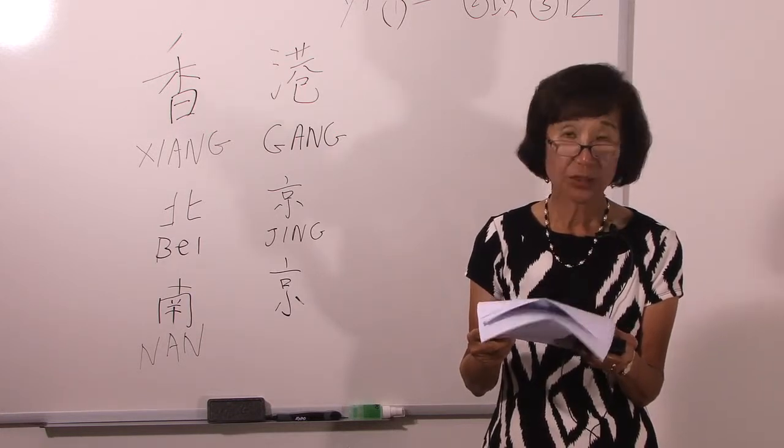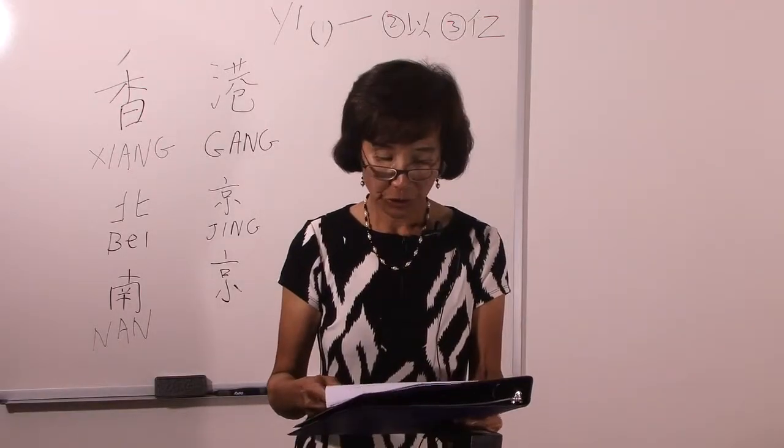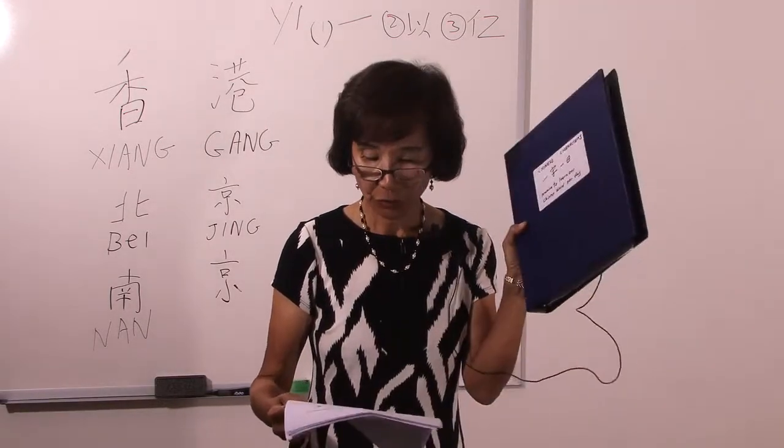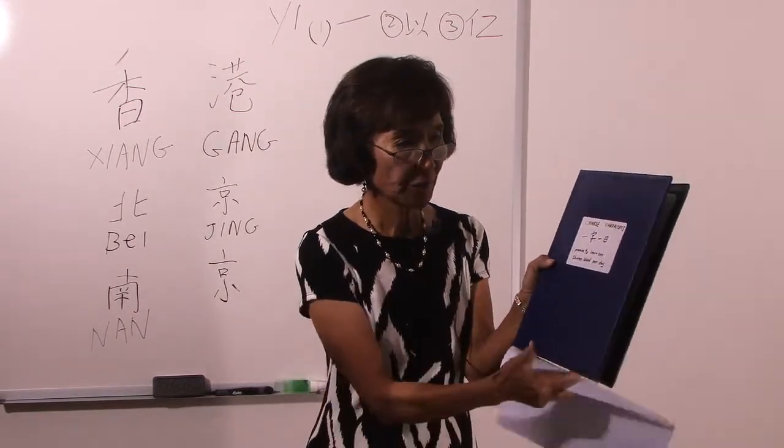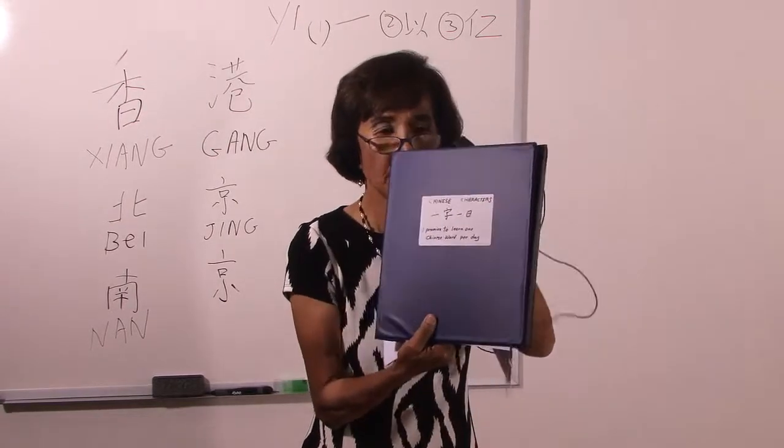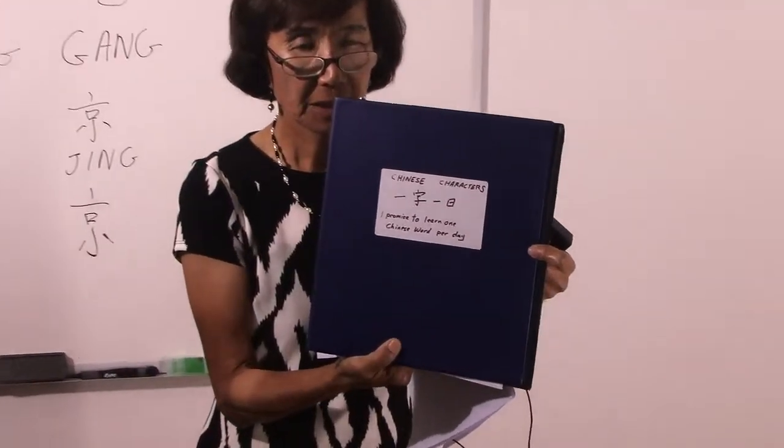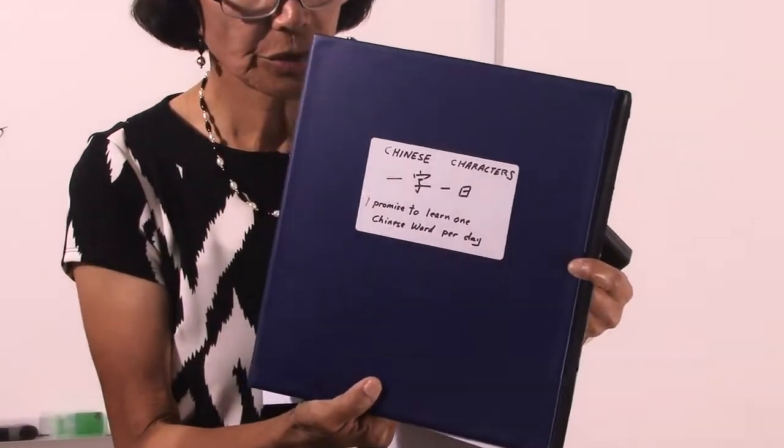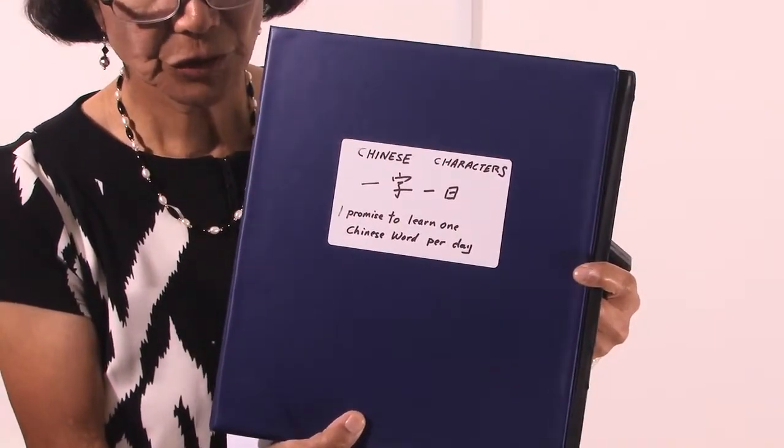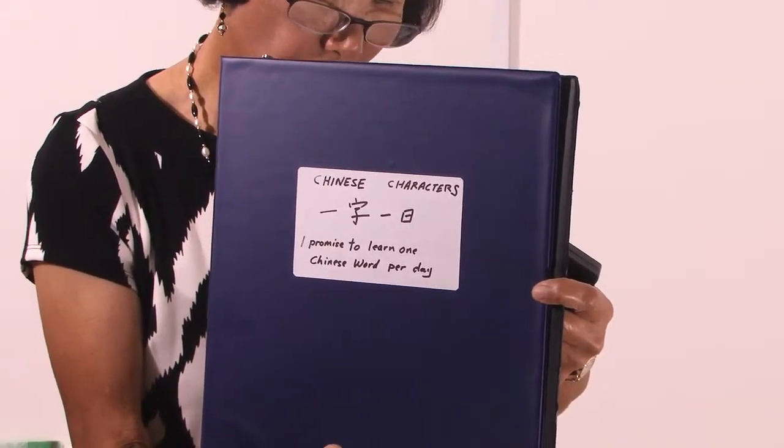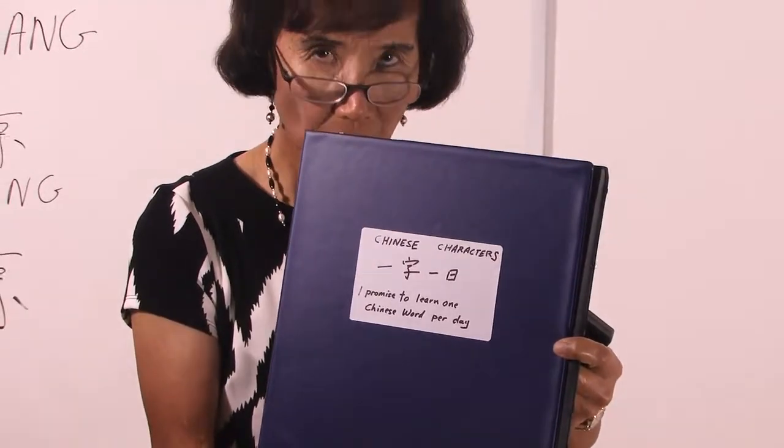Remember, I'll be writing to you regularly from now on. Now that you're serious about learning Chinese, I'd advise you to buy a special folder for this purpose. Write the words Chinese characters on the top line. On the second line, write yizi, yi ri. That means one Chinese word per day. On the third line, you're making me a promise, and you are saying to me, I promise to learn at least one Chinese word per day. And I hope you keep your promise.